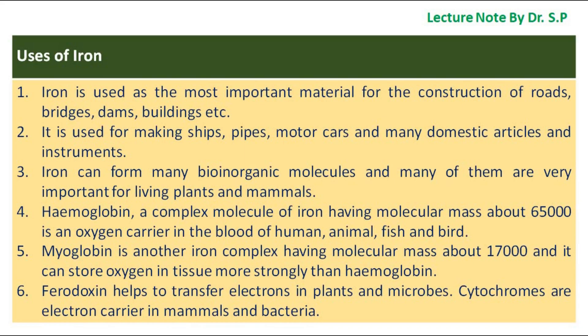It is used for making ships, pipes, motor cars, and many domestic articles and instruments. Iron can form many bio-inorganic molecules and many of them are very important for living plants and mammals. Hemoglobin, a complex molecule of iron having molecular mass about 65,000, is an oxygen carrier in the blood of humans, animals, fish and birds. Myoglobin is another iron complex having molecular mass about 17,000 and it can store oxygen in tissue more strongly than hemoglobin. Ferredoxin helps to transfer electrons in plants and microbes. Cytochromes are electron carriers in mammals and bacteria.